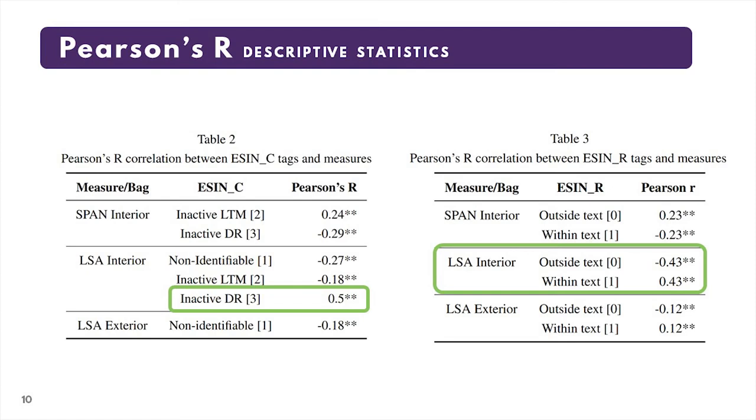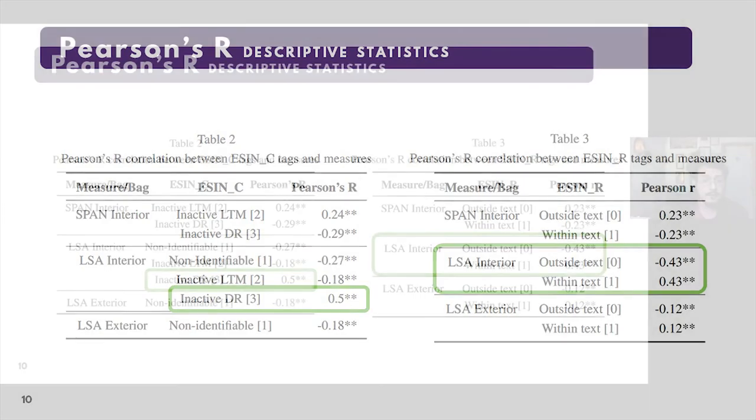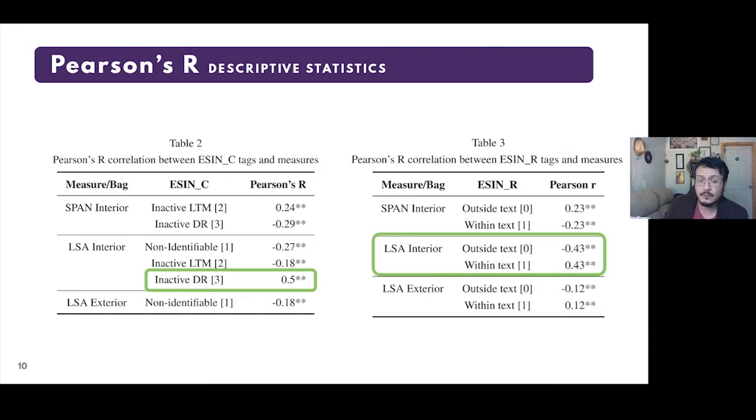In the case of the reduction to two groups, the following was found, shown in Table 3. Again, using the exterior window of the phrases shows low correlation, where SPAN exterior does not show any correlation at all. And again, LSA interior shows the best correlation.